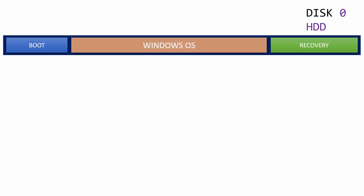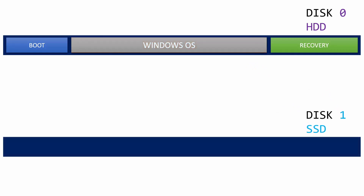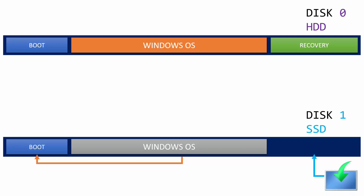The Windows partition is the most important partition to make an image of, from disk 0 to disk 1. Because the data in the first partition can be created from the Windows partition, and the data in the third partition can be obtained from any Windows installation media, or you can download Windows and copy and paste the Windows recovery WIM file.